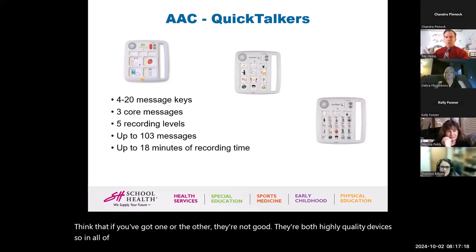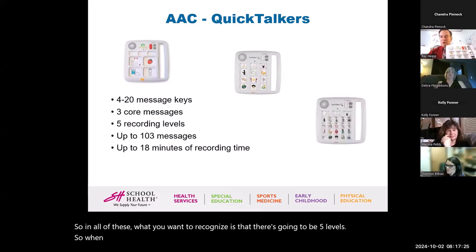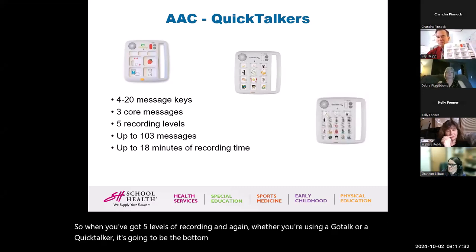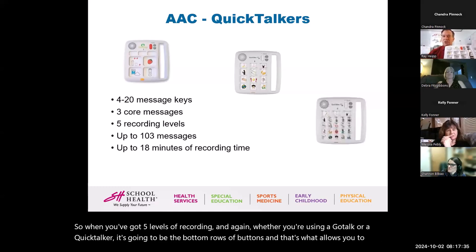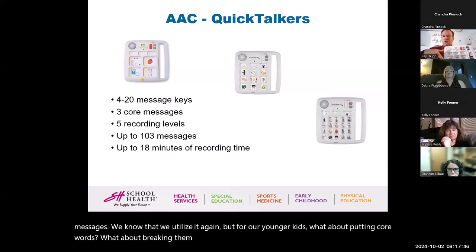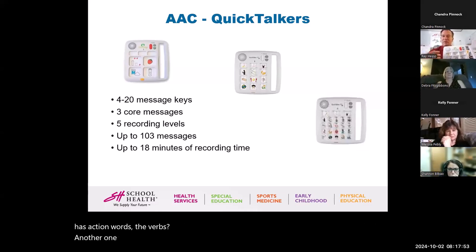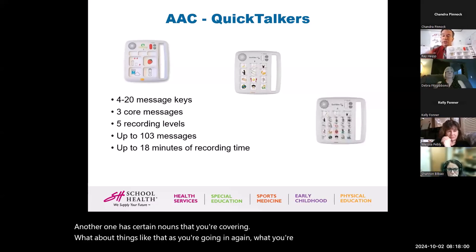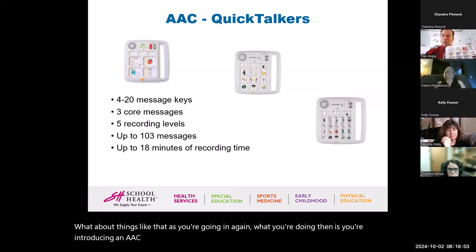What you want to recognize is that there are going to be five levels of recording. Whether you're using a GoTalk or a QuickTalker, the bottom rows of buttons allow you to have the messages. For our younger kids, what about putting core words? Breaking them down — one sheet has action words, the verbs; another has nouns you're covering. What you're doing is introducing an AAC device into an early classroom, allowing multi-purpose usage. These should never be sitting anywhere on the side.